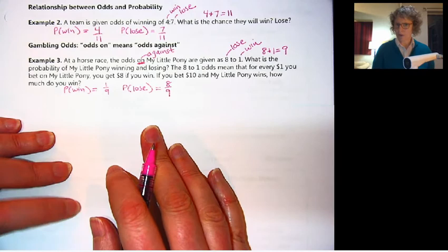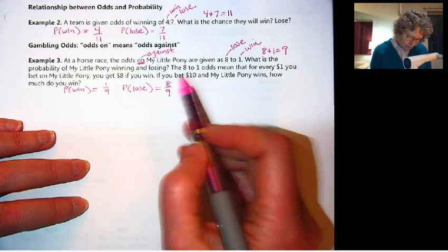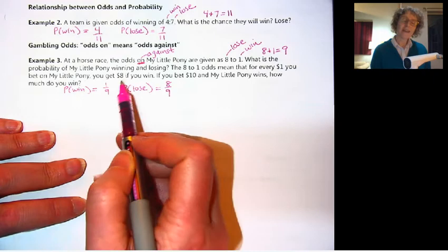So you might call this a long shot. There's probably worse odds to have, or better odds, depending on how you look at it. The eight to one odds means that for every one dollar you bet on my little pony, you get eight dollars if you win.